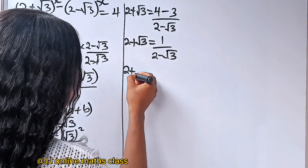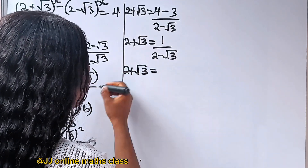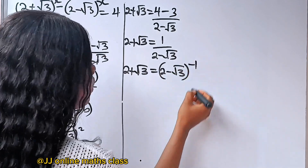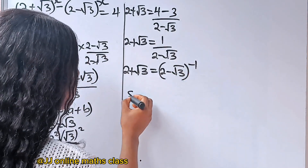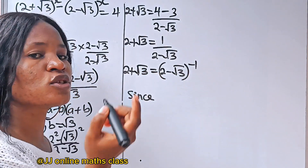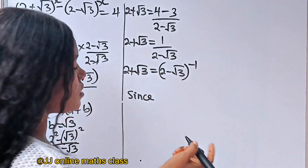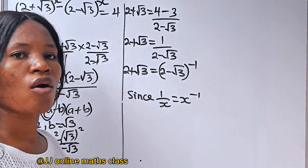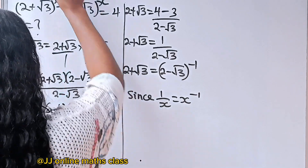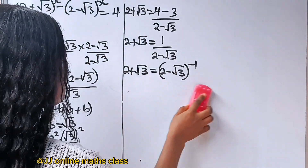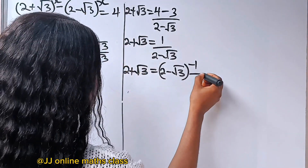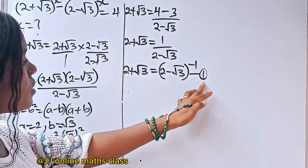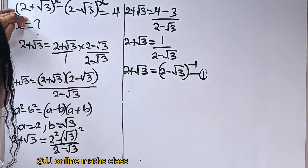Therefore, we can say that 2 plus root 3 is equal to 2 minus root 3 raised to the power of minus 1, since according to the law of indices, 1 over x is equal to x to the power of minus 1. This is a very important equation — let's call it equation 1. Now let's substitute this equation 1 into the main equation.